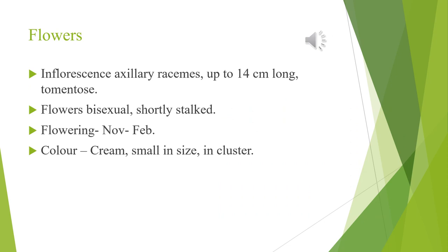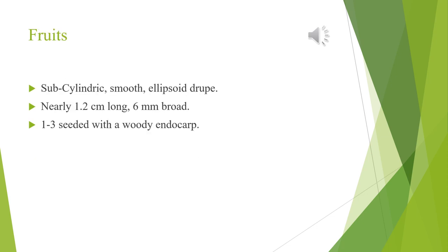Flowers: The inflorescence of Lodra flower is axillary racemes up to 14 cm long and tomentose. Flowers are shortly stalked and bisexual. Generally, flowering occurs in the month of November and continues till February. The color of flowers is cream, small in size and mostly found in clusters. Fruits are smooth, subcylindric and ellipsoid drupe, nearly 1.2 cm long and 6 mm broad.